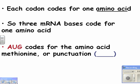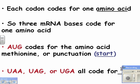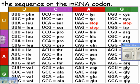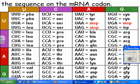AUG codes for the amino acid methionine, or it can code for 'start.' UAA, UAG, and UGA all code for 'stop' — you don't need to memorize these, a chart will be provided. Here's the code of life: UUU and UUC are phenylalanine, UUA and UUG are leucine.